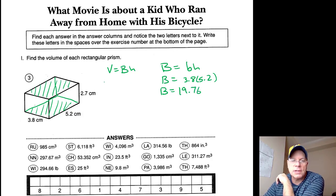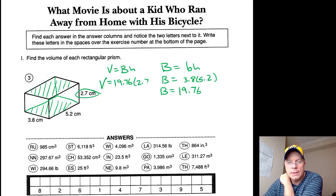19 and 76 hundredths. So the volume of the prism is equal to 19.76 multiplied by the height of the prism. The height of the prism is the perpendicular distance between these two rectangular bases that I've shaded, so the height of the prism is 2.7.